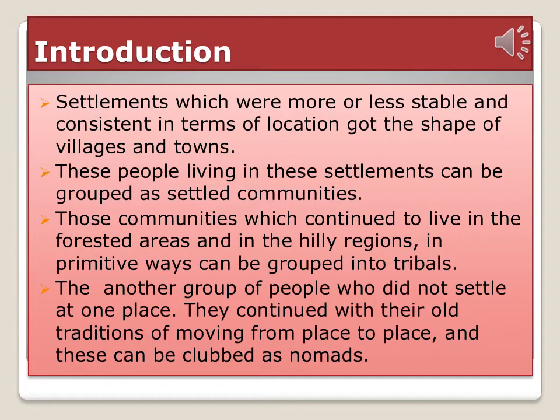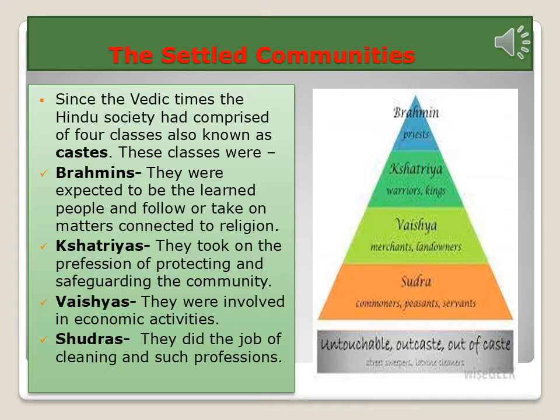People living in settlements can be grouped as settled communities. Communities which continued to live in forested areas and hilly regions in primitive ways can be grouped into tribals. Another group of people who did not settle at one place and continued with their old traditions of moving from place to place were known as nomads. In Vedic times, Hindu society was divided into four classes: Brahmins, Kshatriyas, Vaishyas, and Shudras — based on their professions. Brahmins were learned people connected to religion; Kshatriyas protected the community; Vaishyas were involved in economic activities; and Shudras did cleaning and menial jobs.